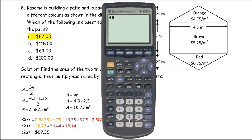This is what the calculation would look like. We go 4.3 times 1.25 and divide by 2. That is where the 2.6875 square meters area comes from.